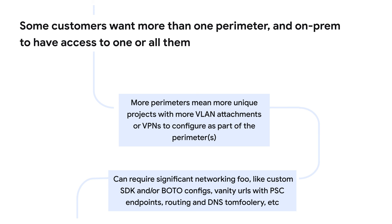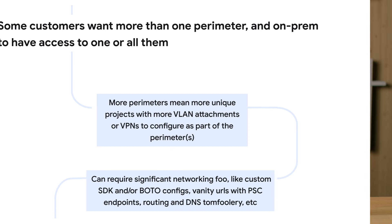Also, if you want to include on-prem in more than one perimeter, you have to get creative with your networking and perimeter architecture, including things like spinning up additional VLAN attachments or VPNs, custom SDK and/or bottle configs, vanity URLs with PSE endpoints — all of which involve routing and DNS complexity. It can be done, but it can introduce significant network complexity. Security people might think it's a great idea, while the networking people might want to have a nice long talk with the security people.